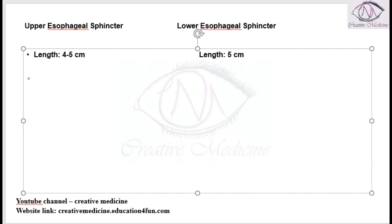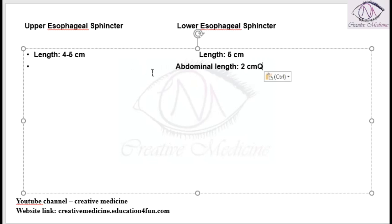One more important parameter is the abdominal length of the lower esophageal sphincter. The abdominal length of the lower esophageal sphincter is around 2 centimeters.